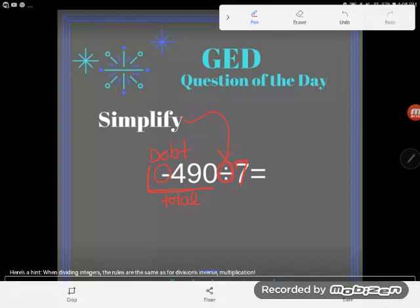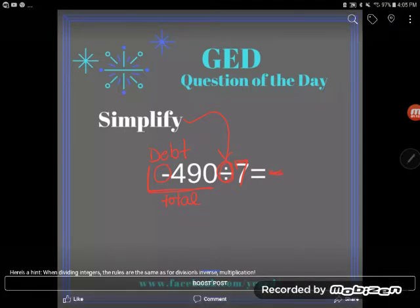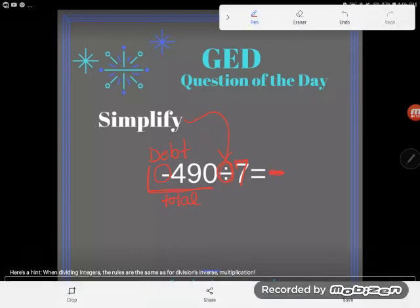If you think about it, I owe money to each one of them, so my answer definitely has to be negative. The question is: if I owe $490 total equally among seven people, how much do I owe each person? That's a really good representation of this division problem.